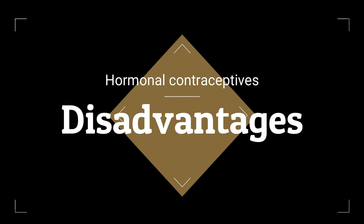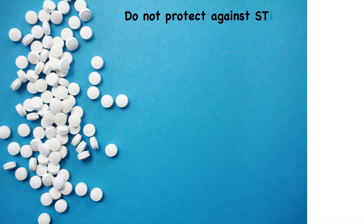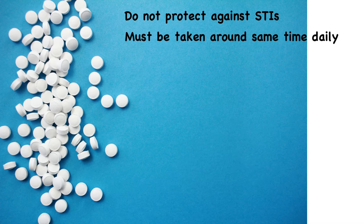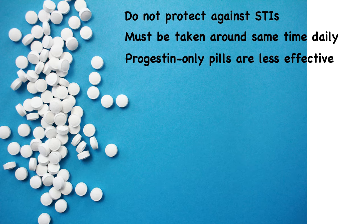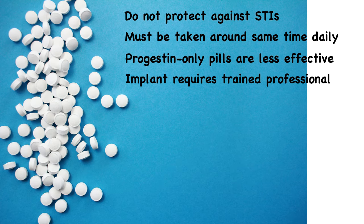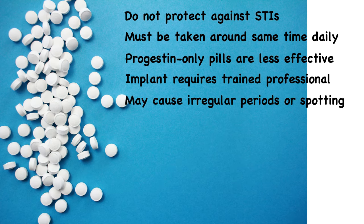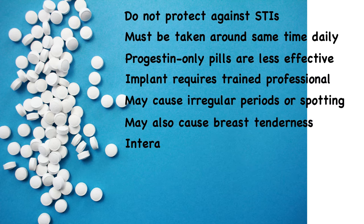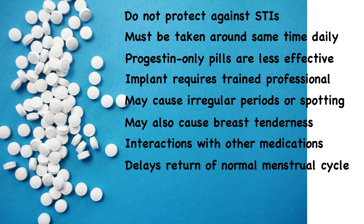The disadvantages of hormonal contraceptives include that they do not protect against sexually transmitted infections. Birth control pills must be taken around the same time every day to be effective, and progestin-only pills are less effective than combination pills. The implant requires placement by a trained healthcare professional, and this method may cause irregular periods or spotting. They may also cause breast tenderness, interact with other medications, delay the return of normal menstrual cycle, and can cause weight gain.